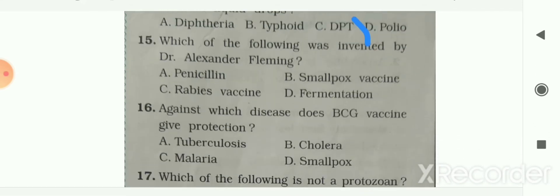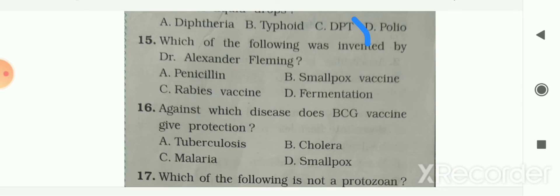Next question: which of the following was invented by Dr. Alexander Fleming? Options are penicillin, smallpox vaccine, rabies vaccine, or fermentation. Penicillin is your answer. It was invented by Dr. Alexander Fleming.